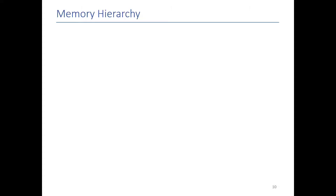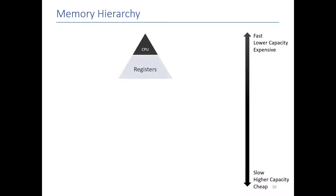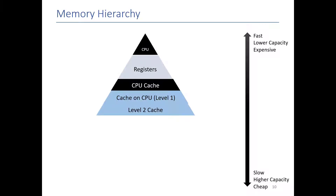Hopefully one of the interesting things you picked out of that video was the idea that we have different types of memory on our computer. We have what we call a memory hierarchy that explains the trade-offs between different types of memory. At the top of the hierarchy we have memory that is very fast but low capacity and expensive. At the bottom we have memory that is slow but can store lots of information. On the CPU itself we have memory called registers — super fast but very low capacity, on the order of megabytes, sometimes only kilobytes or even bytes.